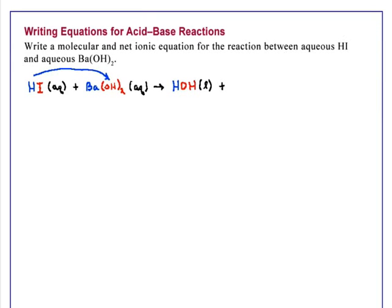And then the second product is formed when the positive barium is attracted to the negative iodide. So we get Ba, because the barium is +2, it needs two iodides, I2. And barium iodide is an aqueous solution.